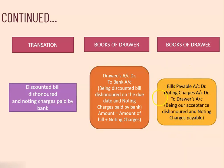We have done case number 2 — bill discounted with the bank, when the bill is honored on due date, and when the discounted bill is dishonored on due date. Please go through all the journal entries of case number 1 and case number 2. After that, we are going to start with case number 3 and case number 4. Please learn all journal entries thoroughly. Thank you, students.